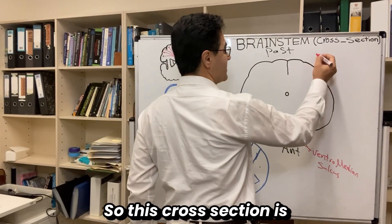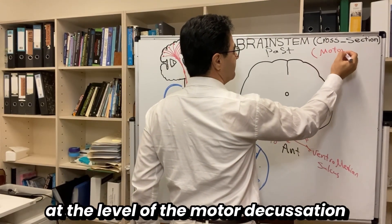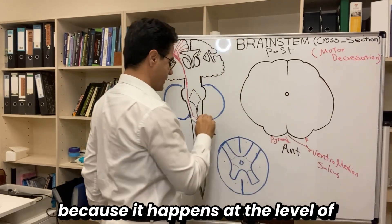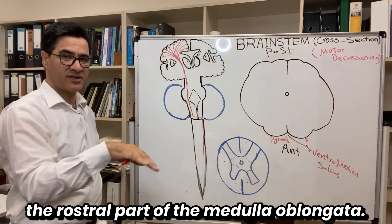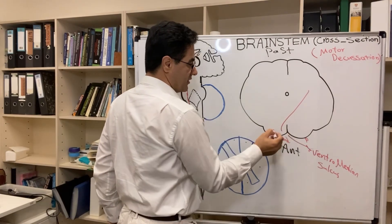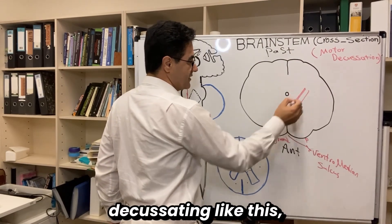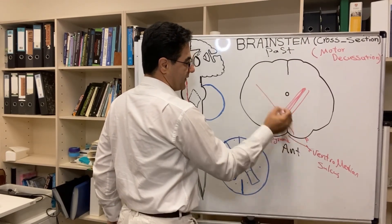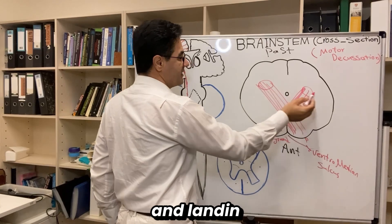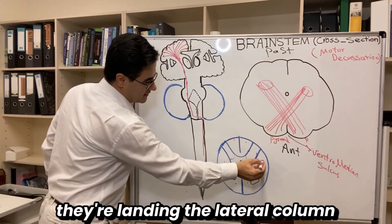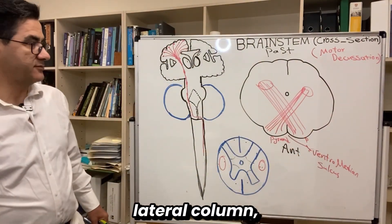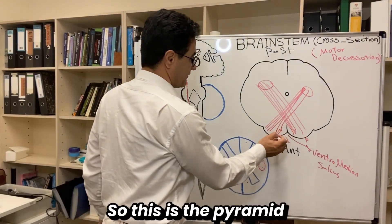This cross-section is at the level of the motor decussation, which occurs at the rostral part of the medulla oblongata. The corticospinal tract fibers cross each other and decussate to the opposite side, landing in the lateral column of the spinal cord and going down to synapse there.